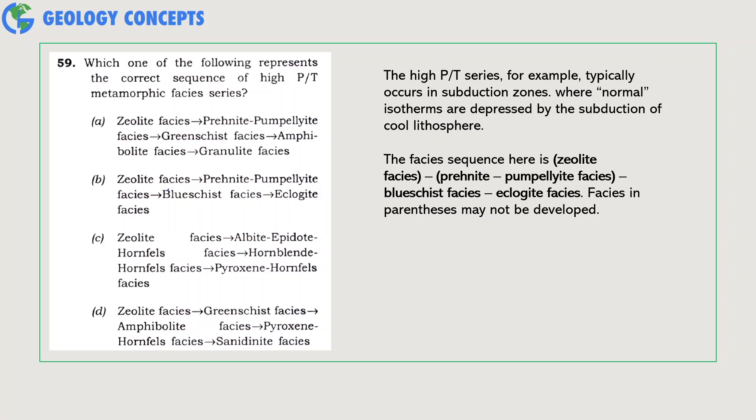Which one of the following represents the correct sequence of high-pressure/temperature metamorphic facies series? The high-pressure/temperature series typically occurs in subduction zones where normal isotherms are depressed by the subduction of cool lithosphere. The facies sequence here is zeolite, prehnite-pumpellyite facies, blueschist facies, then eclogite facies (facies in parentheses may not be developed). So option B is the right answer.